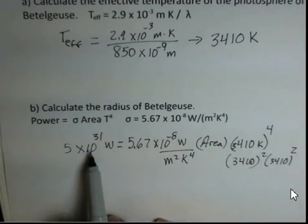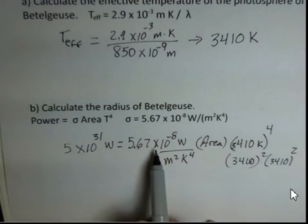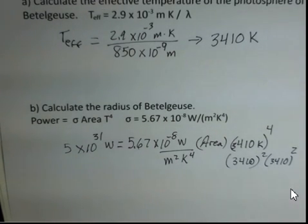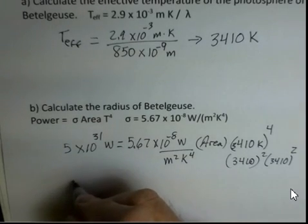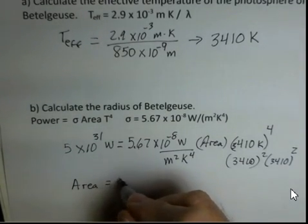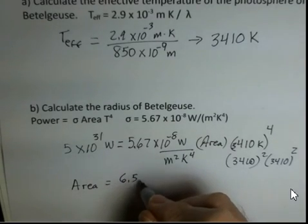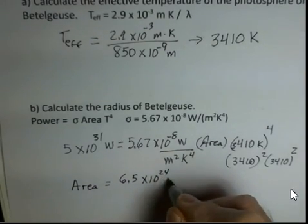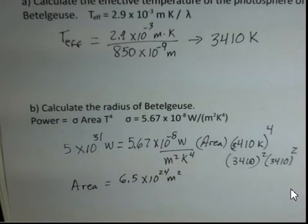So there's our starting number, divide by this number, divide by 3410 to the fourth power. And I come up with an area that's equal to about 6.5 times 10 to the 24th meter squared. 6.5 times 10 to the 24th meter squared.